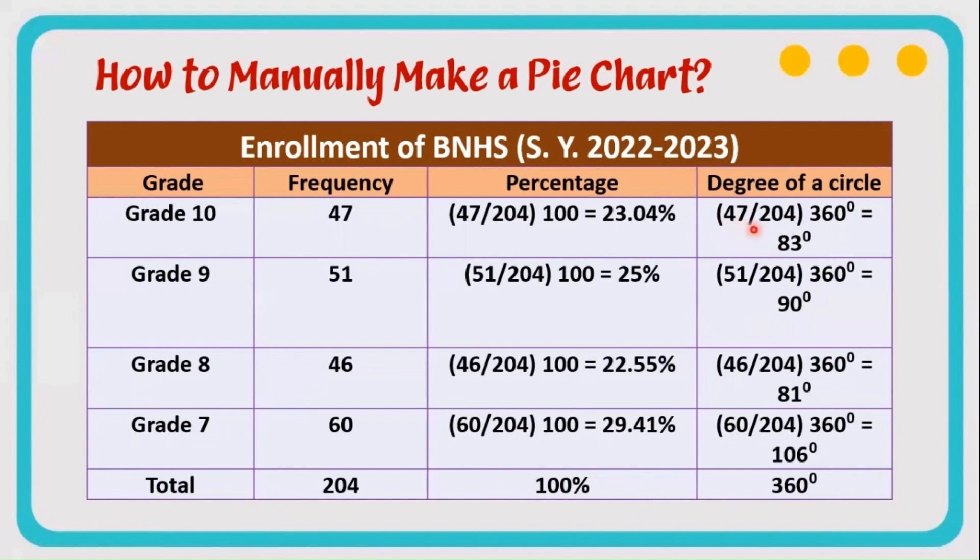That is 47 divided by 204 times 360. The 360 is based on the whole degree measure of a circle, so we get here 83 degrees.